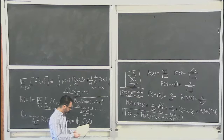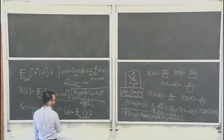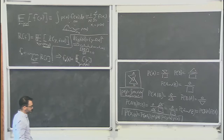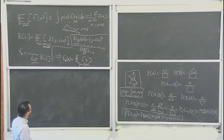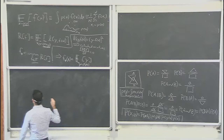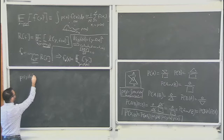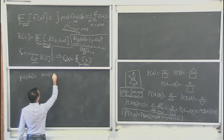Let me get to some examples. P(Y|X), using Bayes' theorem, looks like P(X|Y) · P(Y) / P(X). In the binary classification case — where Y equals 0 or Y equals 1 — we can write P(Y=1|X) = P(X|Y=1) · P(Y=1) / P(X), and P(X) = P(X|Y=1) · P(Y=1) + P(X|Y=0) · P(Y=0). In notation, capital Y refers to the random variable and lowercase y to a specific value.